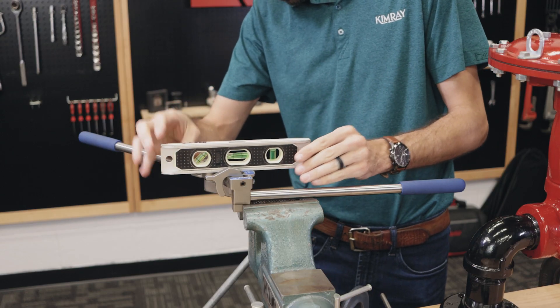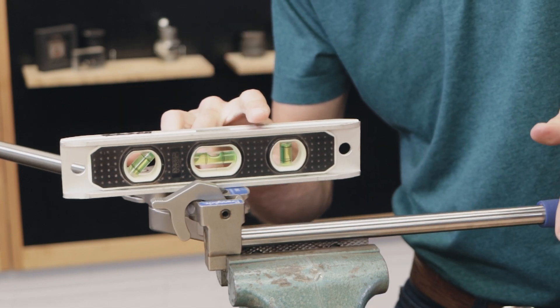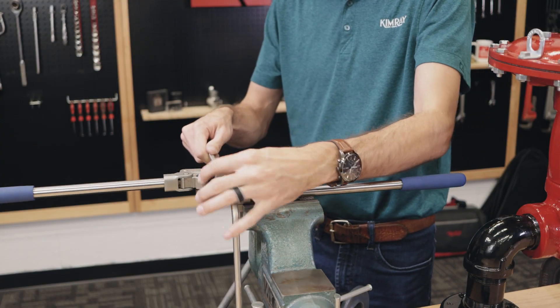Before clamping the latch down all the way, make sure that your tubing bender is square with the bend you previously made. Check the level of the tool, then check the level of the previous bend.